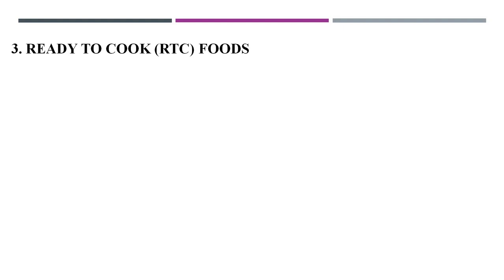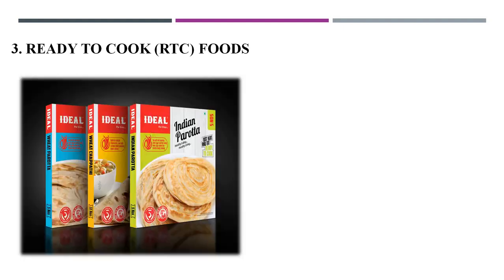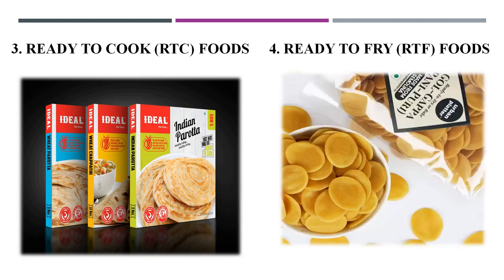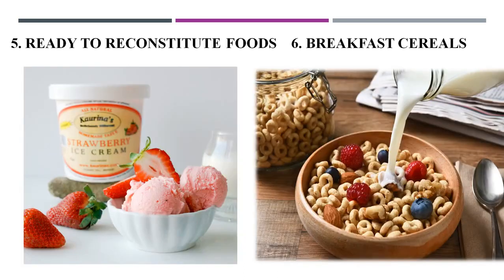Ready-to-cook foods: instant idli, dosa, and rava idli mixes are examples of ready-to-cook foods. Ready-to-fry foods: finger chips, wafers, fries, and chicken preparations are examples of ready-to-fry foods.